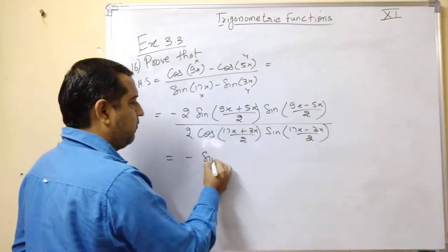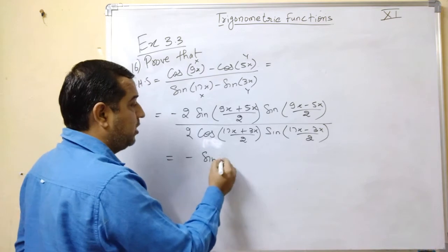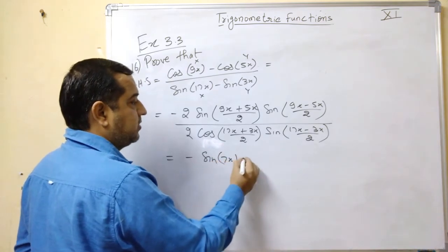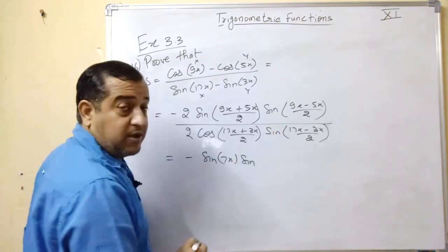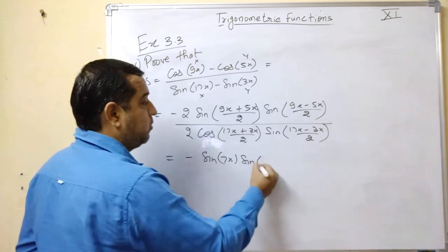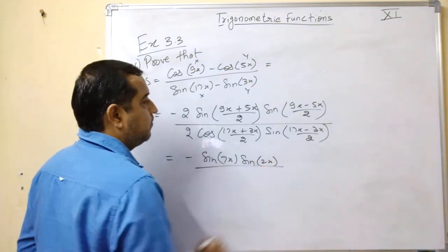This is sin of 9 plus 5 gives you 14. 14 divided by 2 gives you 7x, into sin 9 minus 5 gives 4. 4 divided by 2 gives you 2x.